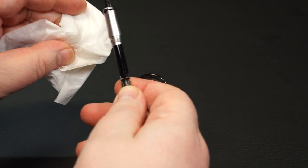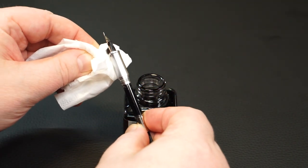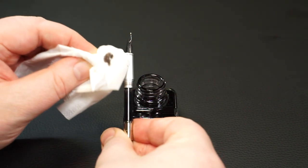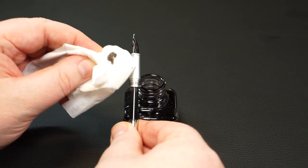Immediately after removing the fountain pen from the inkwell, the first thing we do is carefully wipe the grip area. This way you can already touch it carefully here.